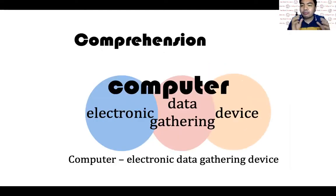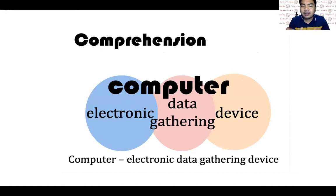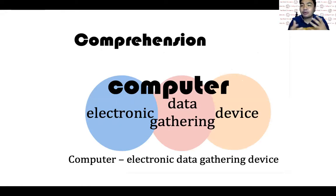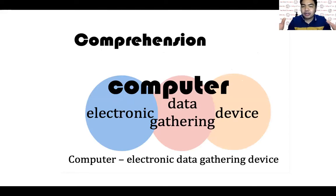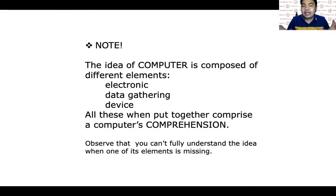For example, when you have the idea of the word 'computer,' what comes into your mind? These are the elements. According to this PowerPoint: electronic, data gathering, device — to describe a computer. When you put all these elements together, it is an electronic data gathering device. The idea of computer is composed of different elements: electronic, data gathering, and device.